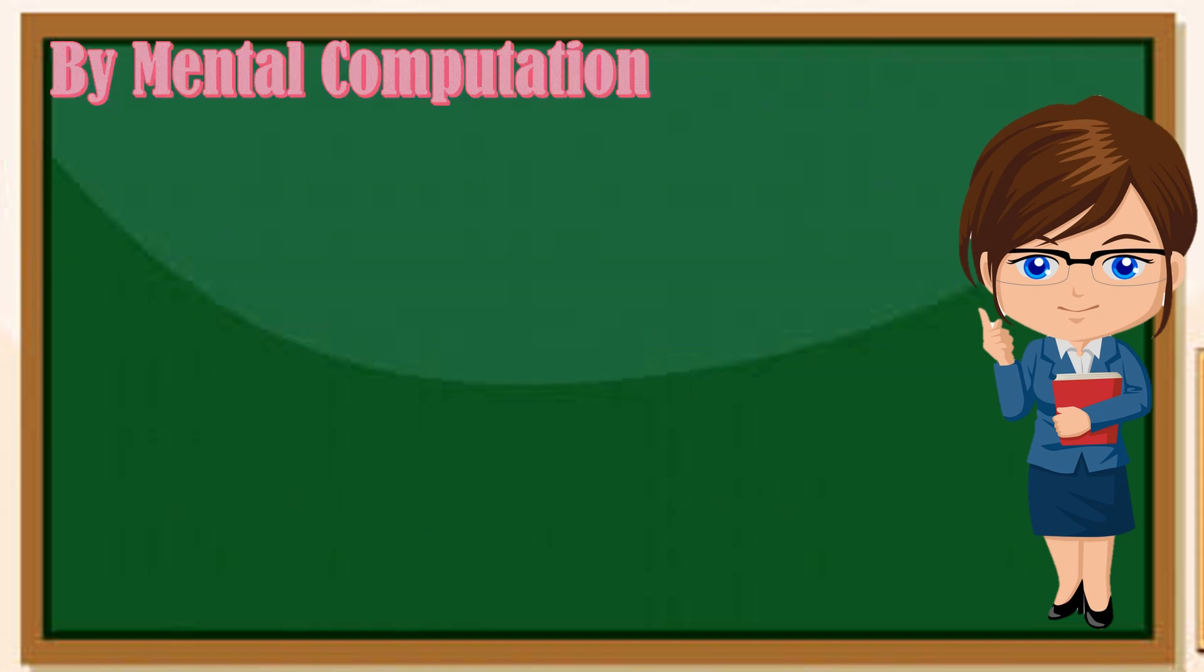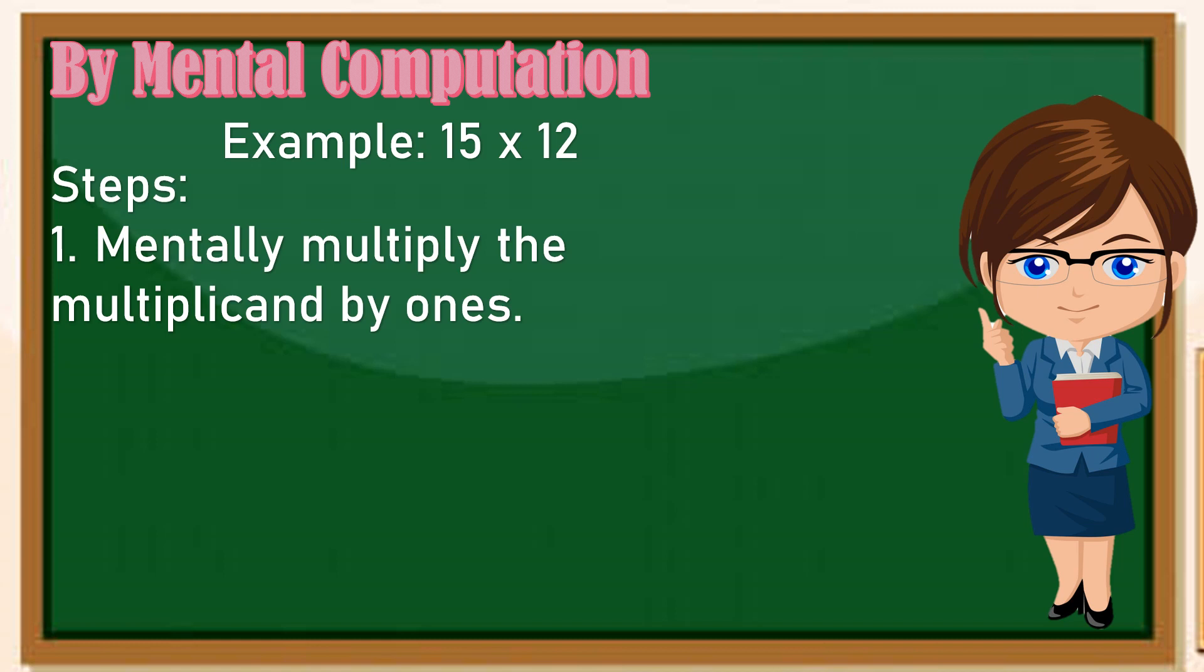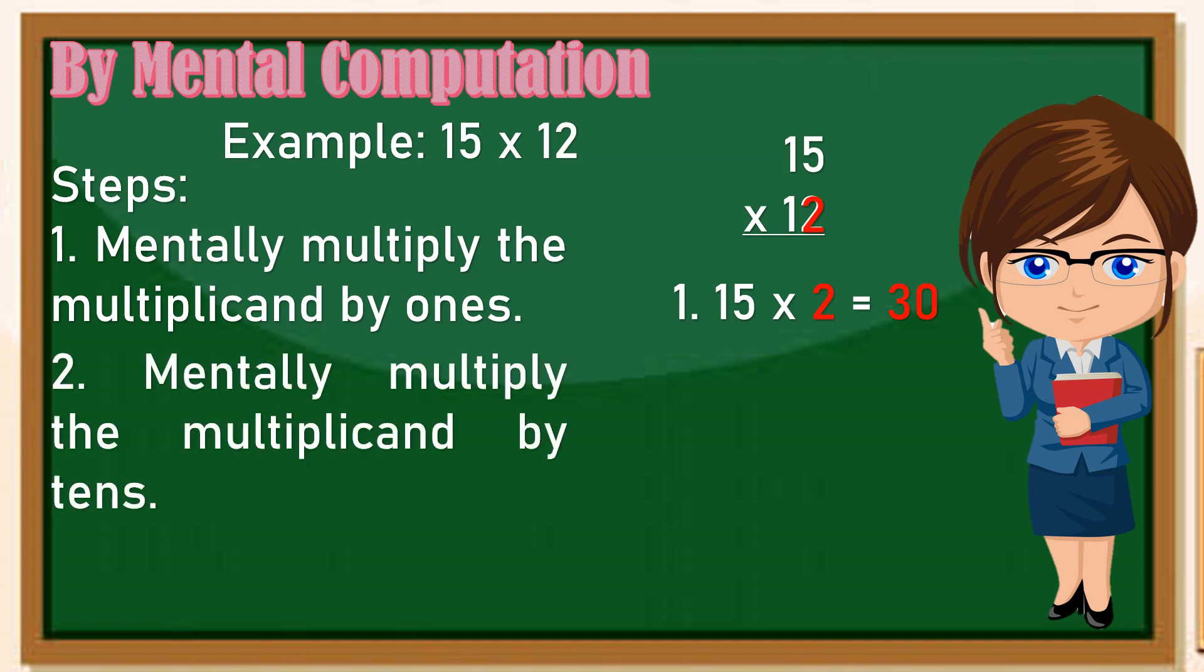Another example is 15 times 12. Uh-oh, pareha silang 2-digit number, paano na? Wag mag-alala, sundin lamang ang mga steps na ito. Una, mentally multiply the multiplicand by ones. Mumultiply natin ang 15 sa 2 since ang 2 ay ang nasa ones place, kaya 15 times 2 is 30. Next, mentally multiply the multiplicand by tens.